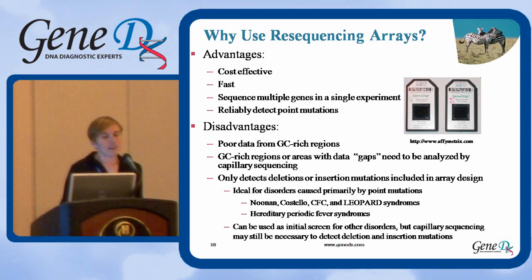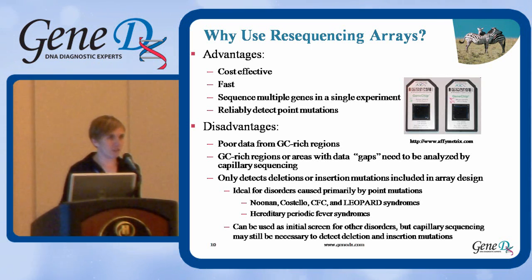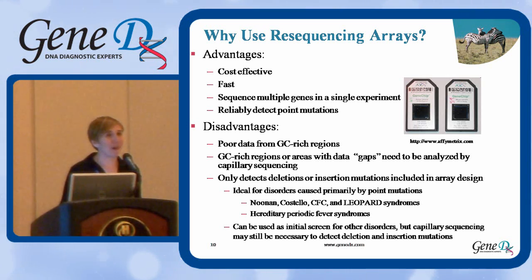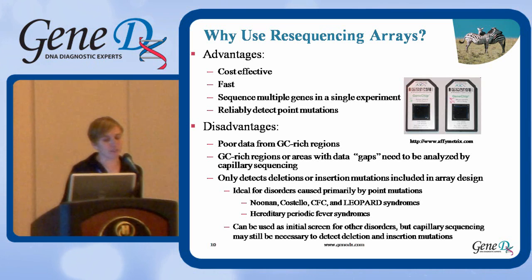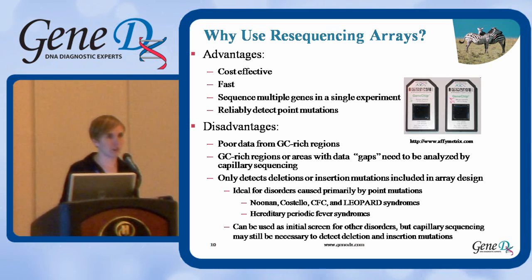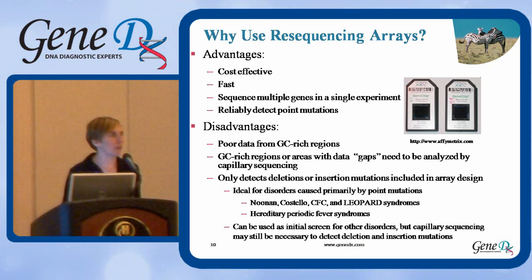Some of the disadvantages of this technology is that you don't get good data from regions of the genome that are GC-rich. There are particular genes that, when evaluating this technology from a lab standpoint, may seem like a good candidate, but when you actually look at the DNA sequence it's too GC-rich and you're not going to get quality data. GC-rich regions or other areas where you get gaps in the data mean your hybridization just doesn't look good.